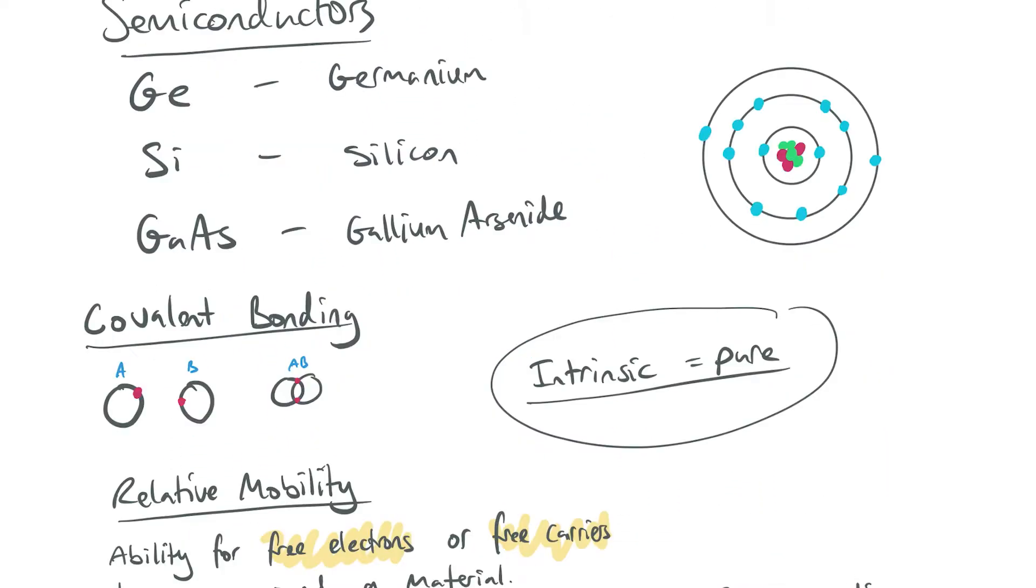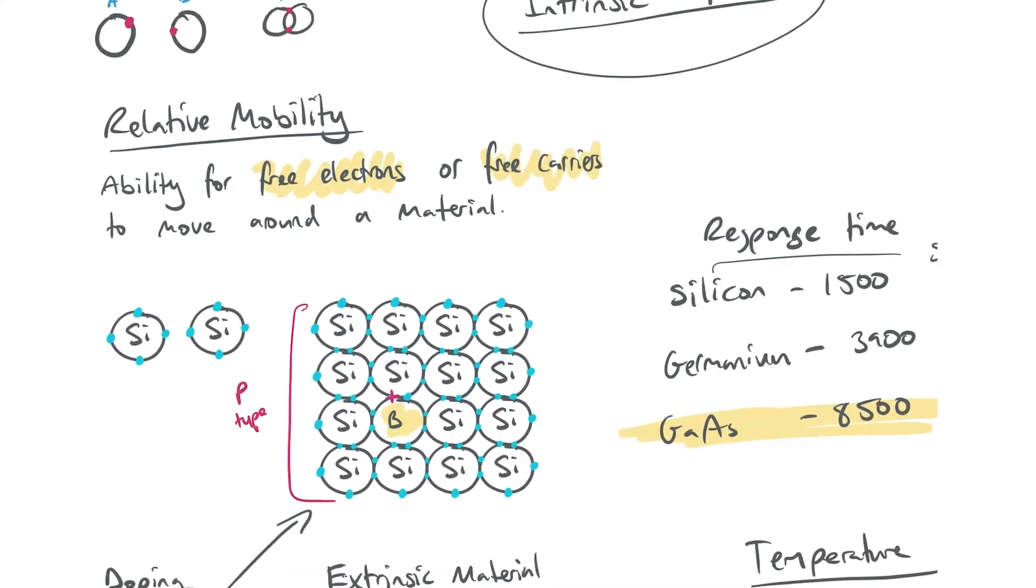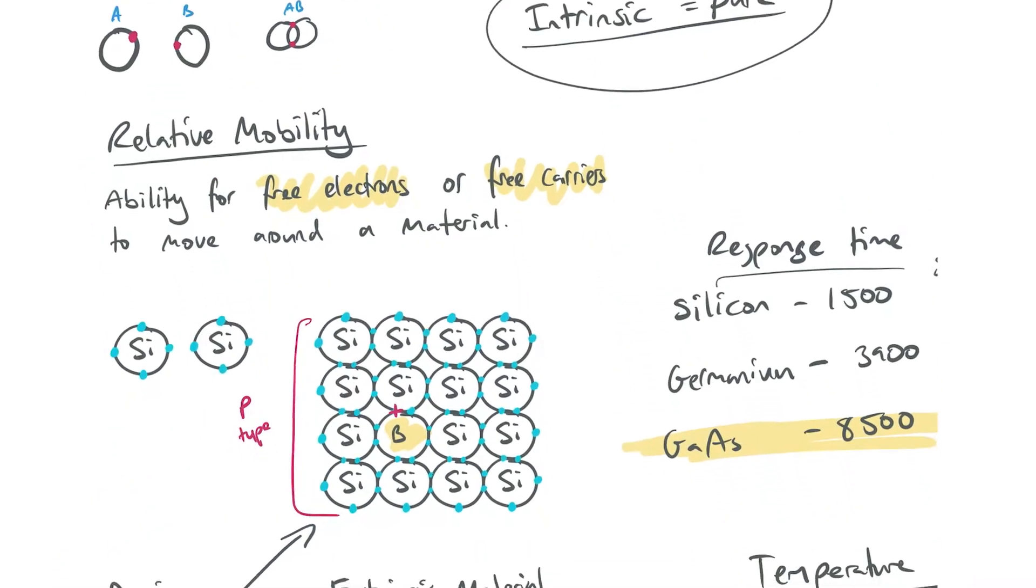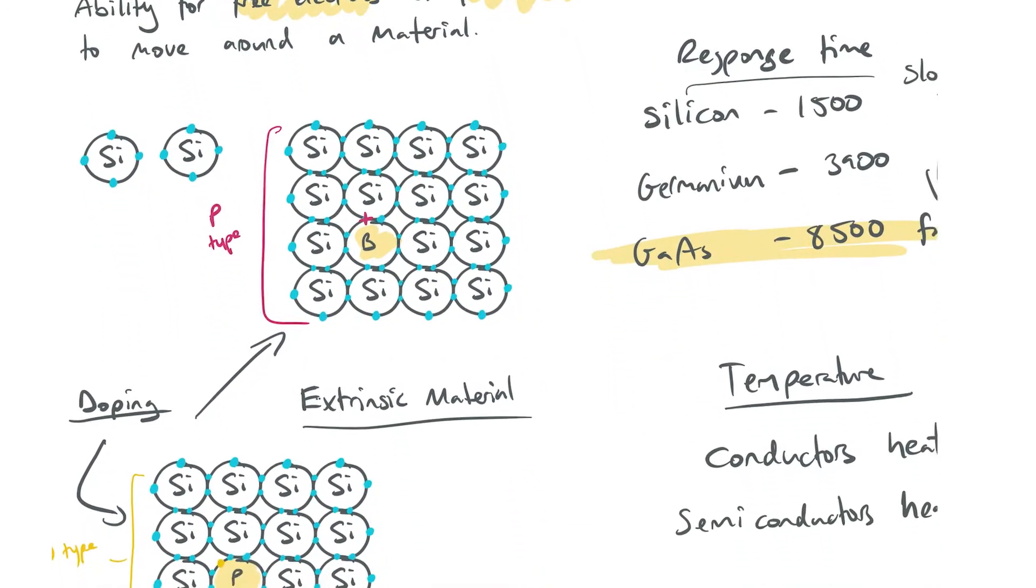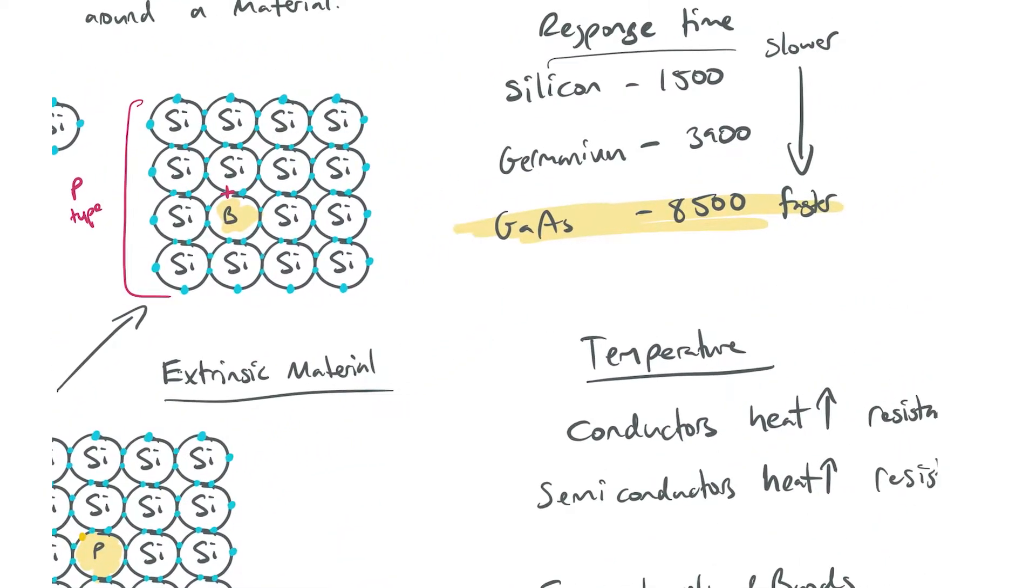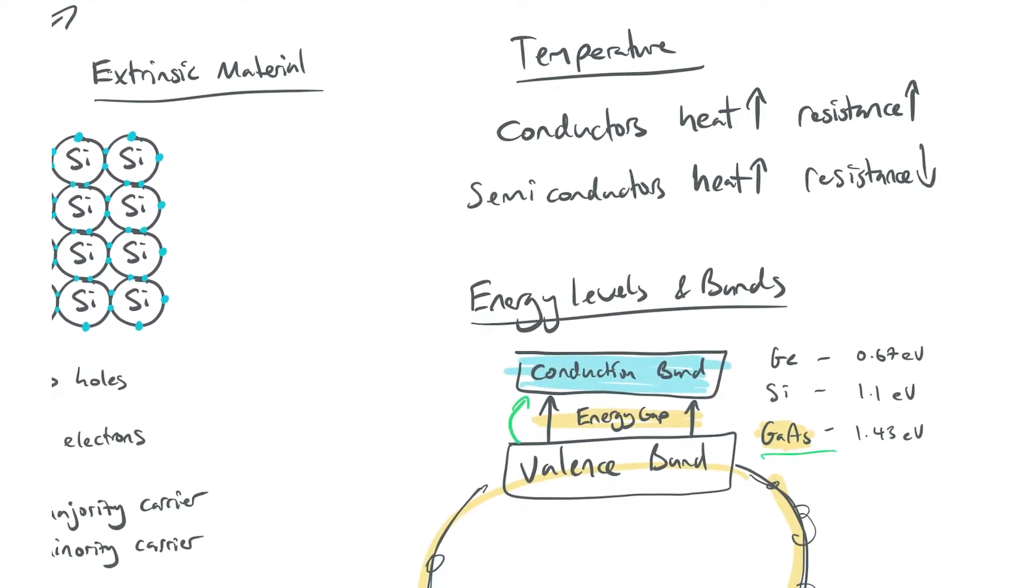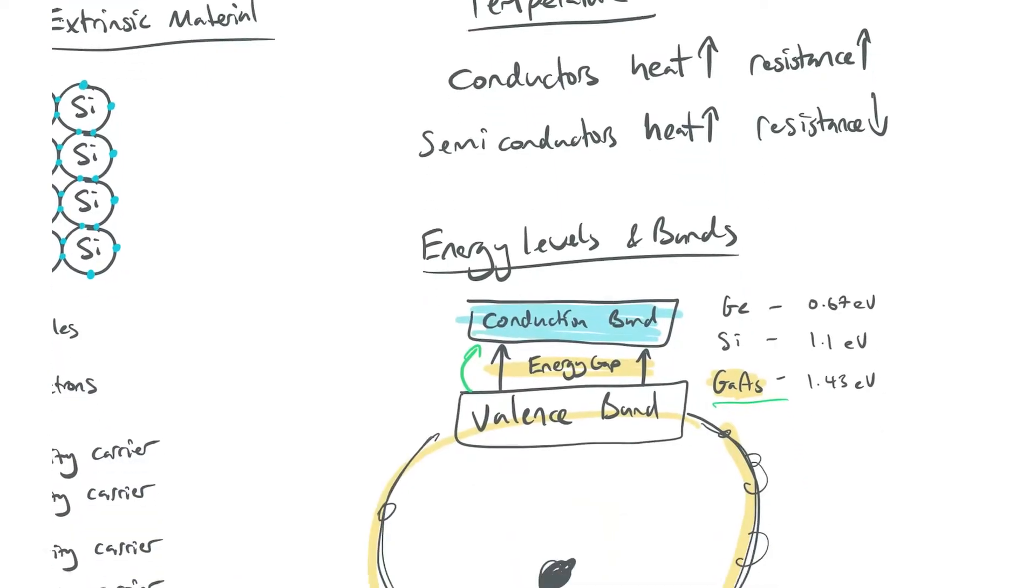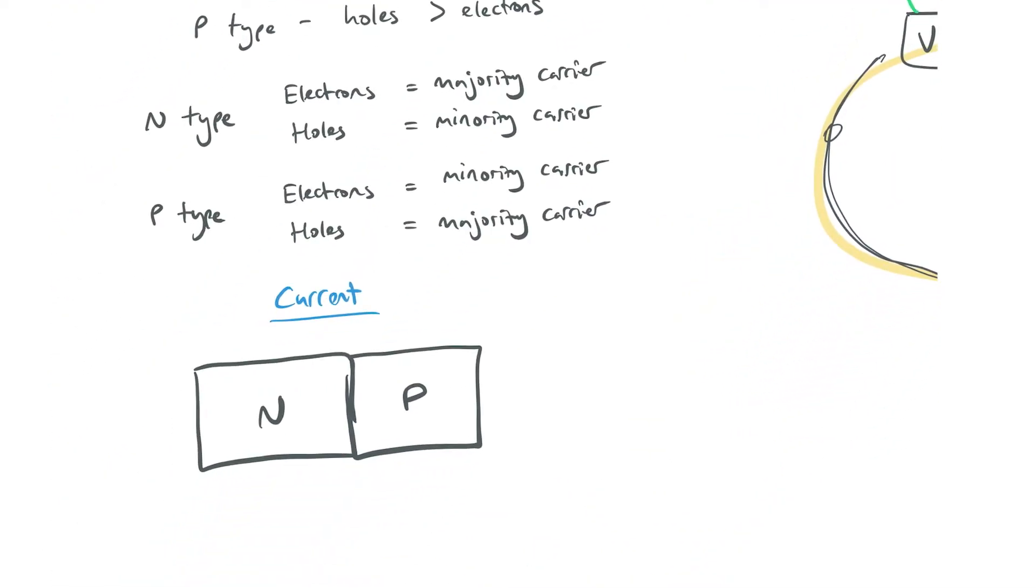So yeah, we'll touch on things like the different materials that we use for semiconductors, we'll go into covalent bonding when it comes to atoms, how you construct P-type and N-type materials, the response times of the different materials, how temperature affects things, and something called the energy levels and energy bands and then how we go about constructing a diode. Yeah, so let's get into it.